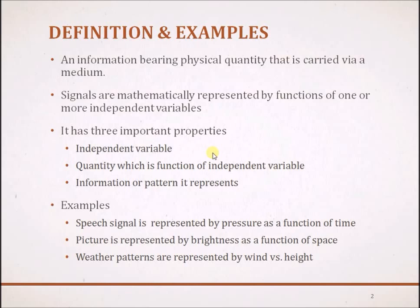The signal has three important characteristics. The first one is an independent variable of which it is a function, and then there is a physical quantity which is a function of this independent variable, and finally this physical quantity basically represents a pattern or it carries information about the real world.